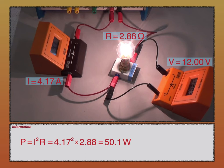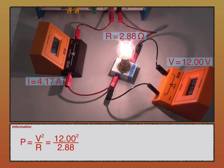Finally, this is the last equation: P is equal to V squared divided by R. Substituting into this equation, we get 12 squared divided by 2.88, which is 58.0 watts. No great surprise there.